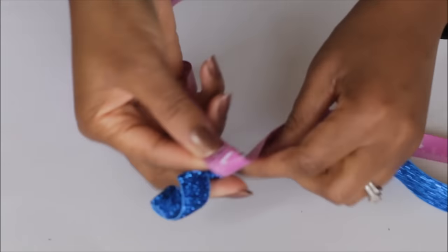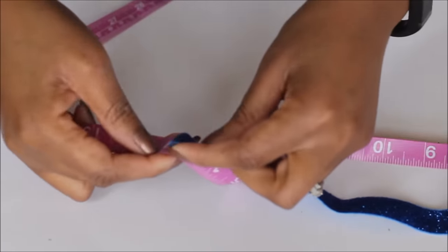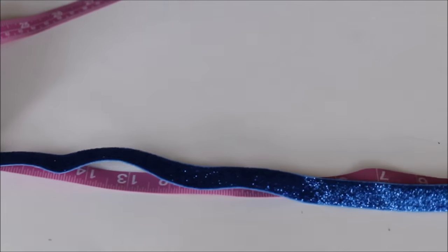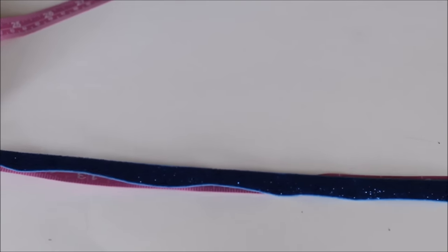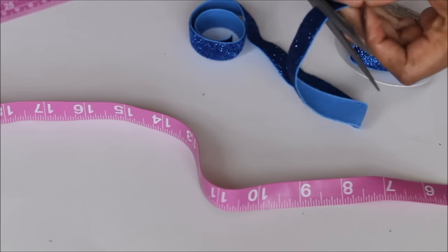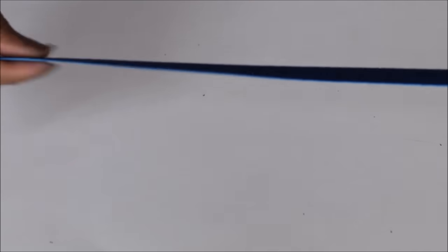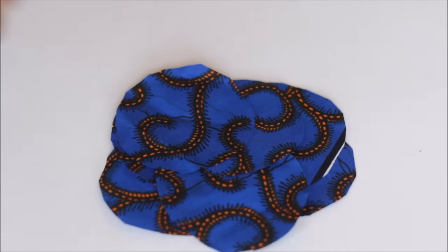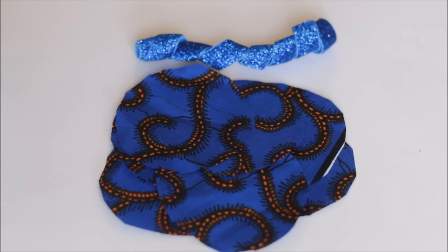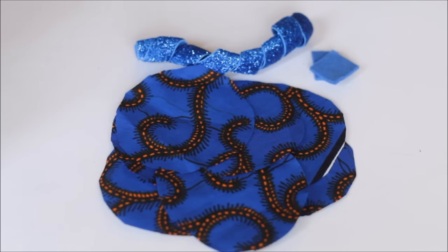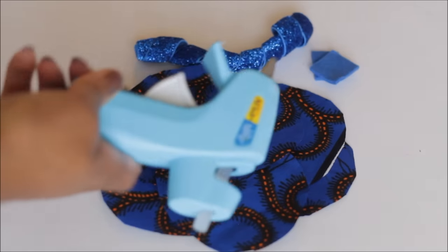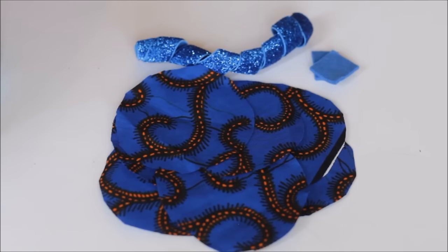And you will measure out your elastic trim. I had mine at 17 inches, and this should fit a three-year-old to a ten-year-old's head. So once you have your pieces, you have your petals, you have your elastic trim, you have your felt, you're ready to start gluing.